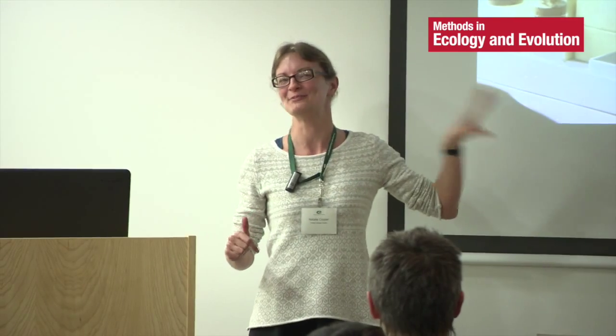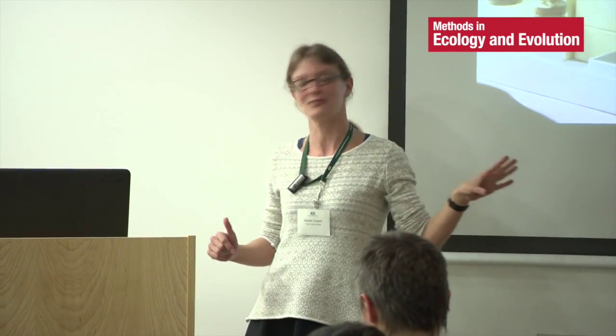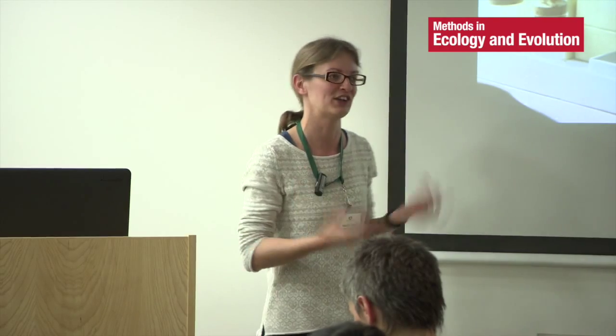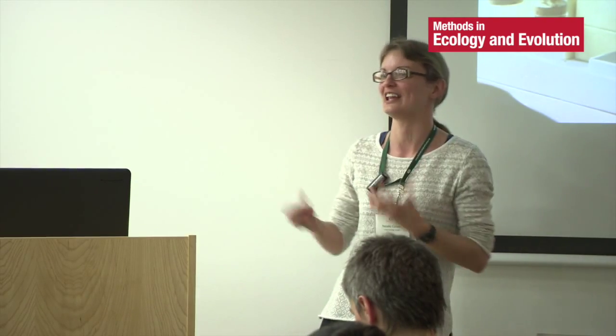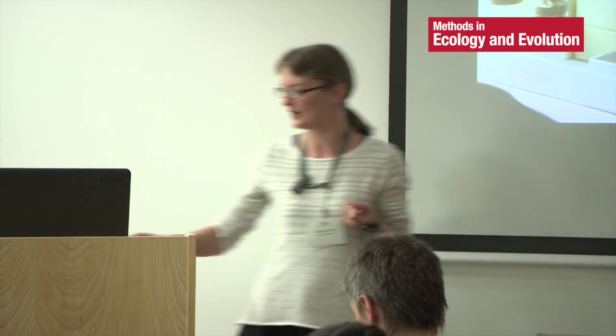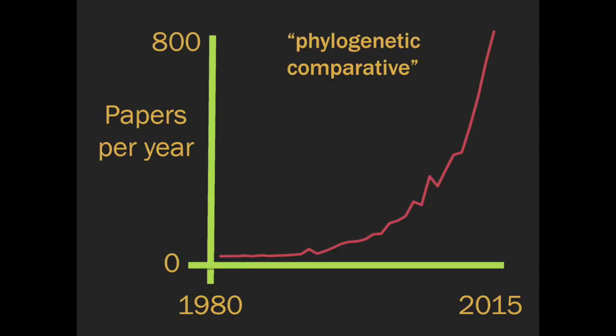Things are not independent, and so we use phylogenetic comparative methods to deal with this. The classical ones would be things like phylogenetically independent contrasts and PGLS — phylogenetic generalized least squares. However, since then, these methods have actually expanded a great deal. They're now used for lots of different things in terms of ecological pattern and process — things like modeling speciation and extinction, looking at diversification rate changes, and also looking at the temporal mode of evolution.